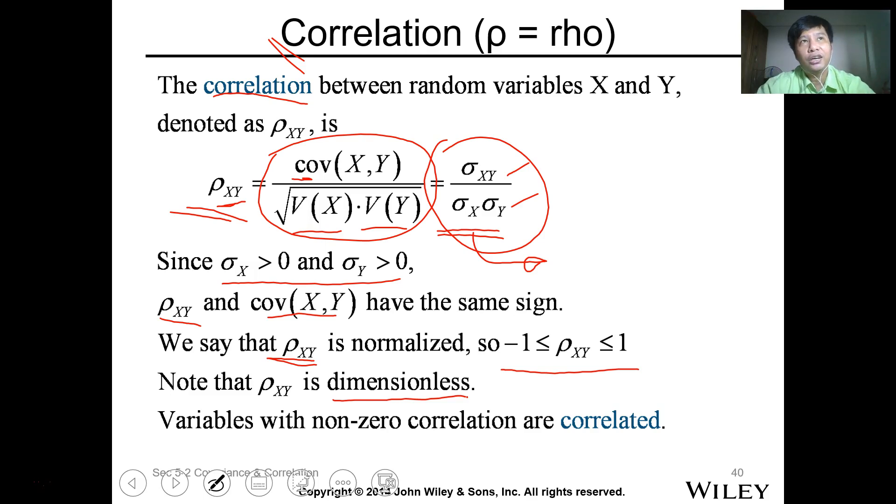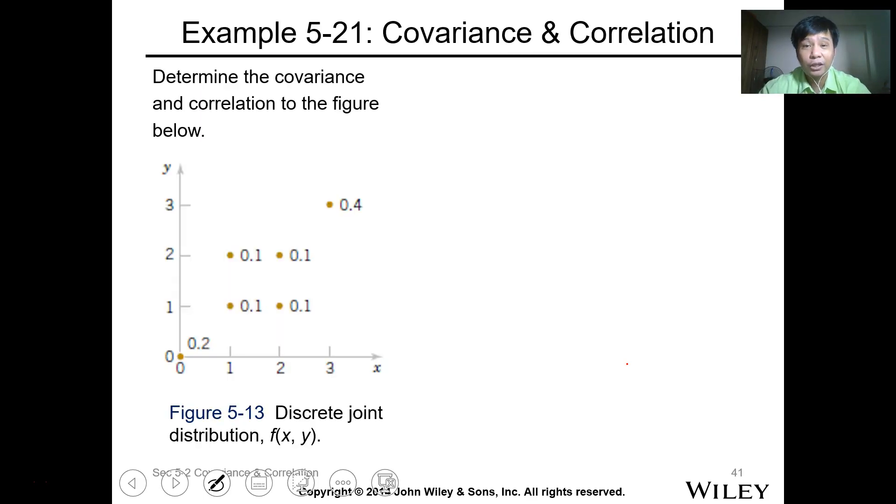Take note that mu x and cov xy have the same sign. Therefore, your rho x will range from negative 1 to 1, and this is a dimensionless value. Variables with non-zero correlation are correlated - they have a relationship. The strength of the relationship depends on the value. If you have near negative 1 or 1, strong linear correlation. If near zero, no linear correlation.